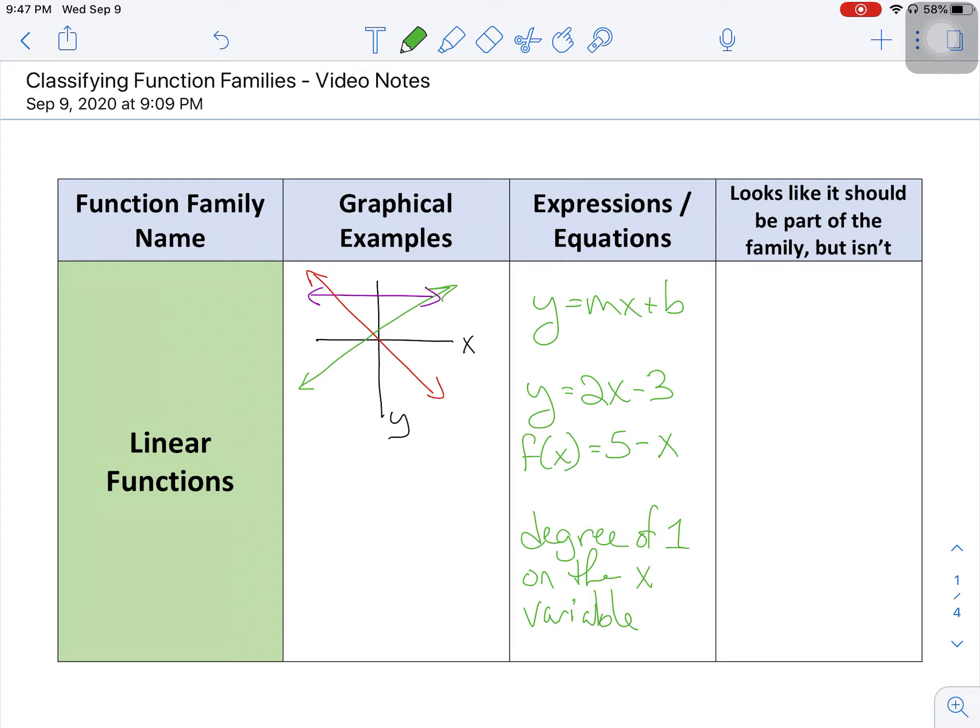So things that look like it should be part of the function family, but isn't. This is going to be a little bit weird, but here's my x-y axis, right? If I draw a vertical line, I said the word line, but that's not a function. So yes, it's a line, but because it's a vertical line, it is not part of the linear function family. So no vertical lines. And basically just make sure it falls into this first degree and you have something that's a linear function. So those are linear functions.